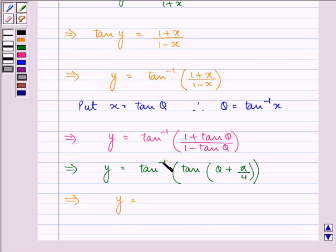We have y equal to, these two will get cancelled and we are left with theta plus pi by 4.